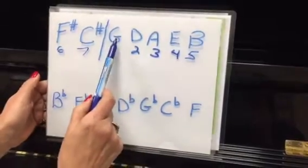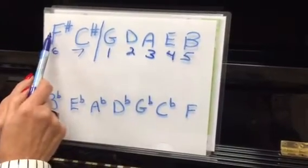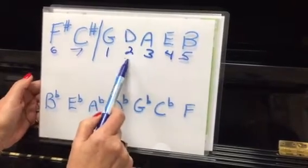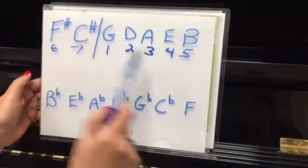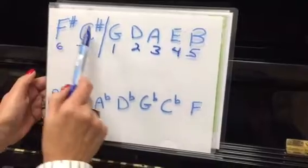Now if you're asked, G major has 1 sharp. What is it? F sharp. D major has 2. What are they? Father Charles. E major has 4. What are they? Father Charles goes down.